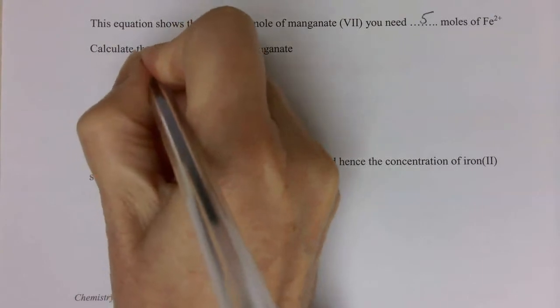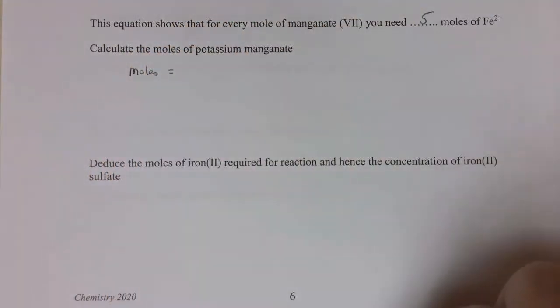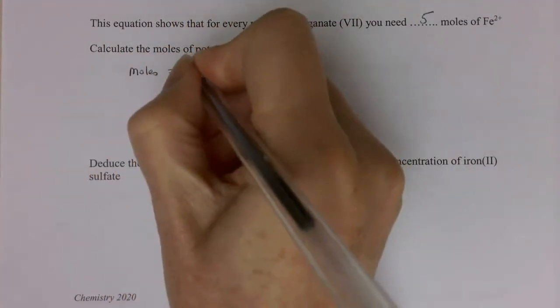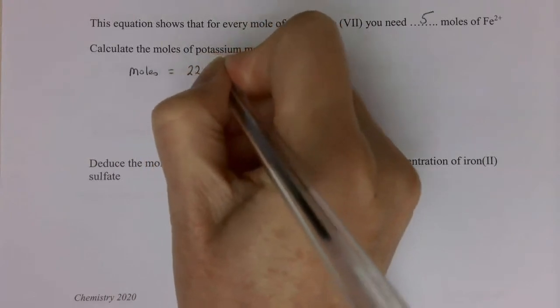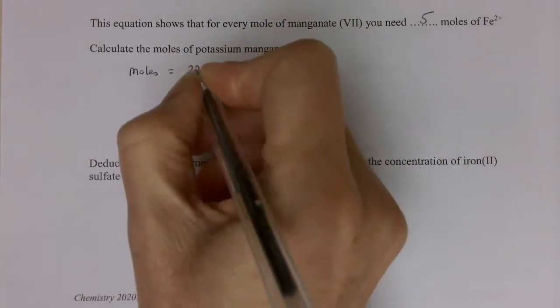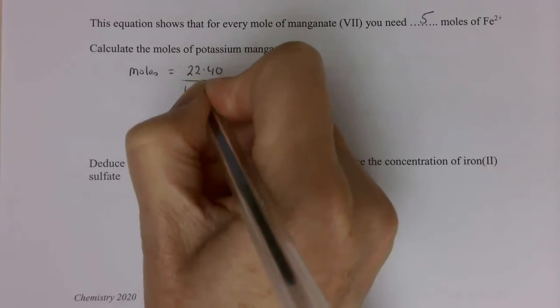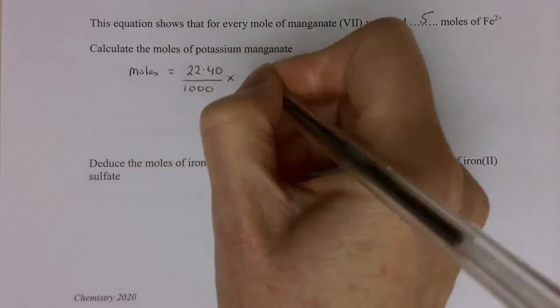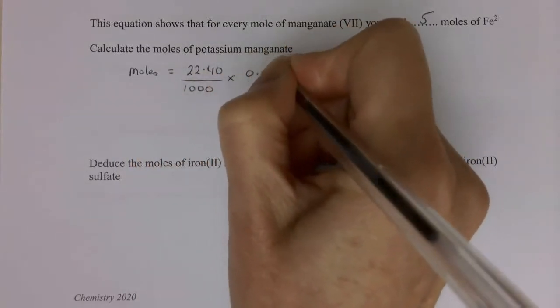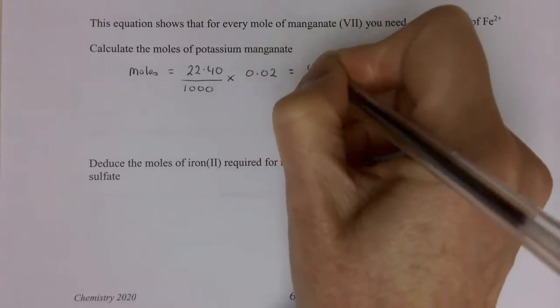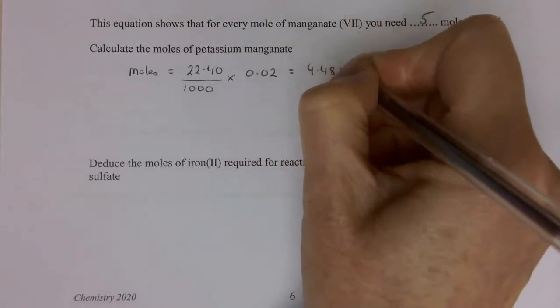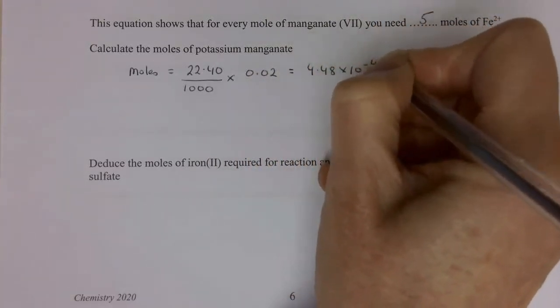So moles, it's a nice lower 60 type question. Moles is volume. Well, we had 22.40 as our average titre, divided by 1,000 times the concentration, which is 0.02, and that gets us 4.48 times 10 to the minus 4.